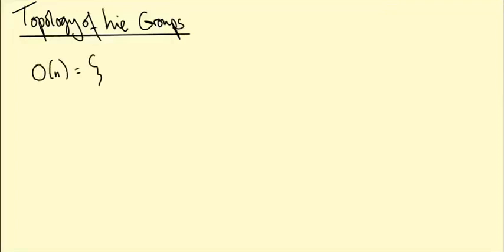In this video I want to talk about the topology of some Lie groups that we've already met and introduce some new ones. First of all, let's look at the orthogonal group: the group of n by n matrices A such that A-transpose times A equals the identity. This includes all of the rotations and reflections of R^n. We were interested in whether this was a simply connected group, and first I should say it's not even a connected group - this group has two components.